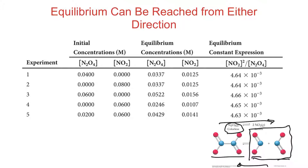So we have two things happening at the same time: the reactant is going to products, and as soon as there's enough product made, the products start joining together to make reactant. At the end, you have a certain amount of reactants and a certain amount of products left — that's equilibrium.